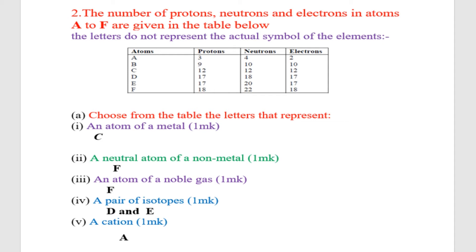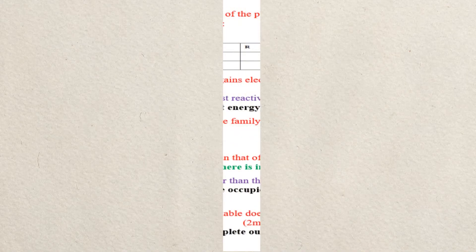The first question asks for an atom of a metal. That atom is C. A neutral atom of a non-metal is F. An atom of a noble gas is F. A pair of isotopes are D and E. A cation is A.